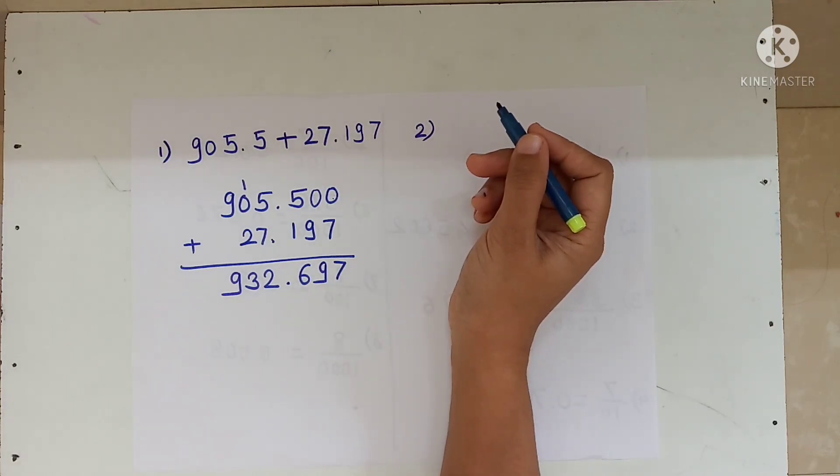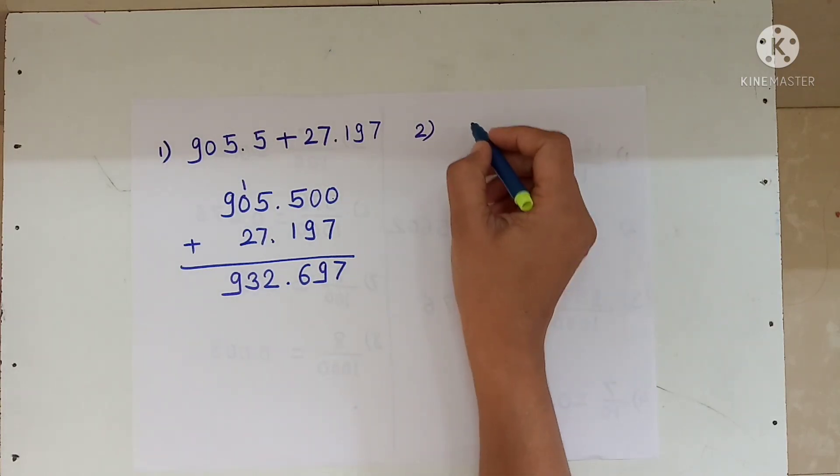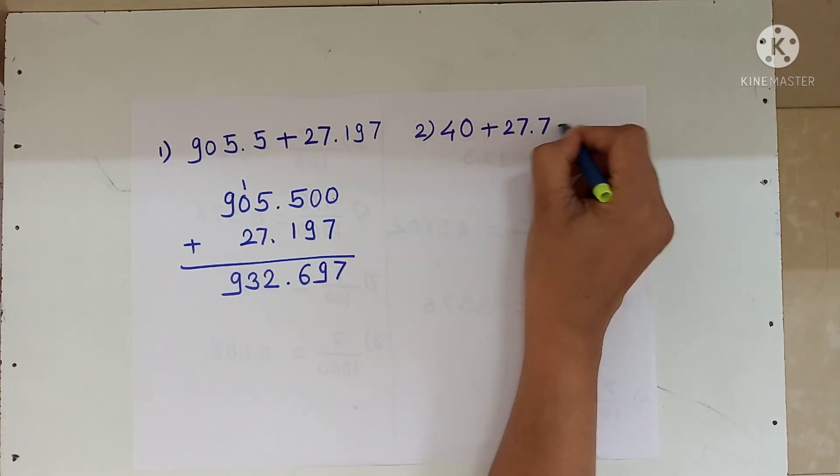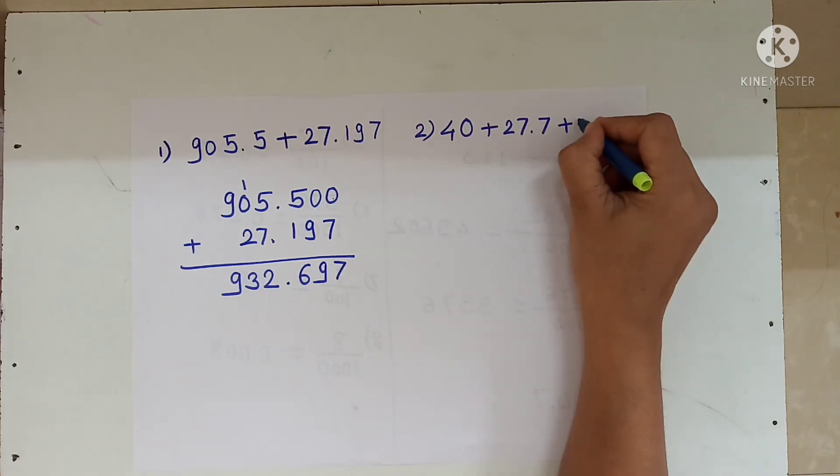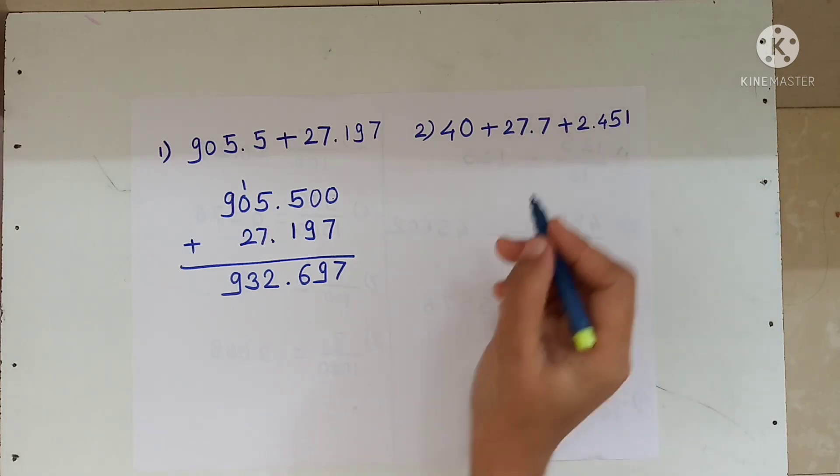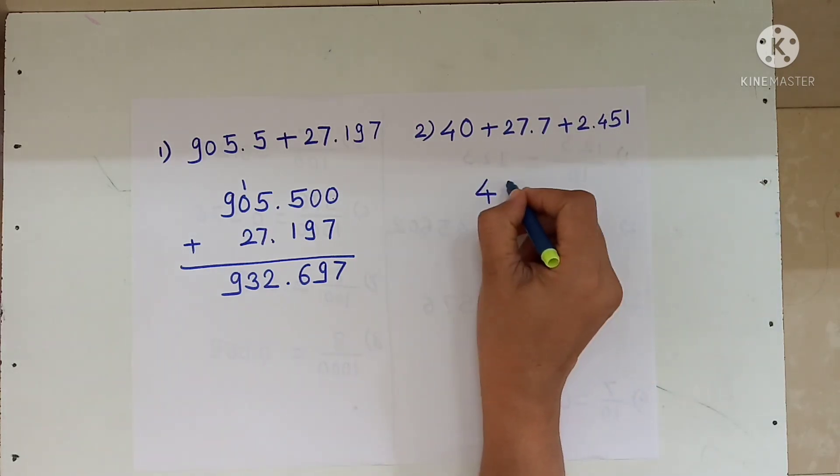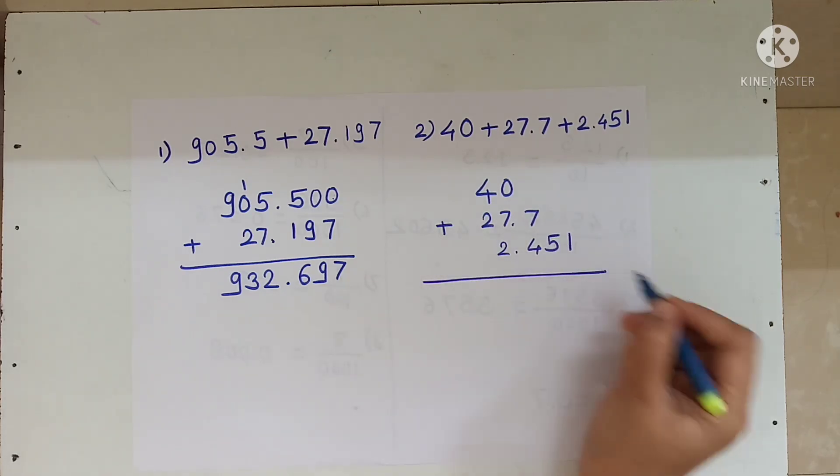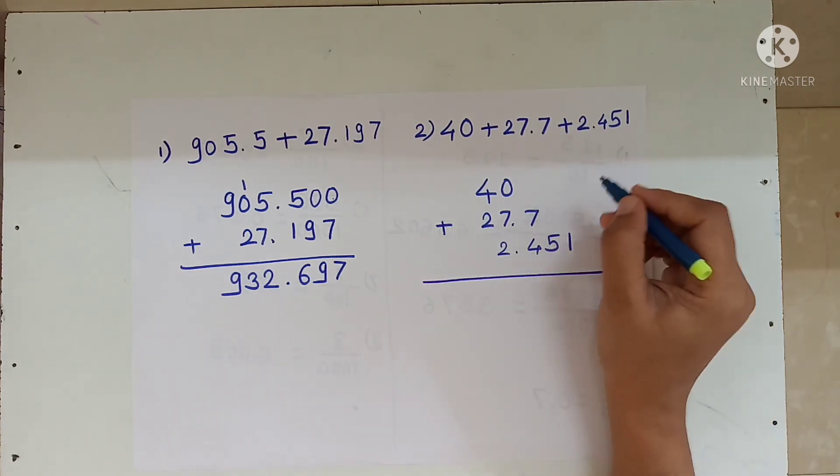Then second example, 40 plus 27.7 plus 2.451. We arrange these for addition.